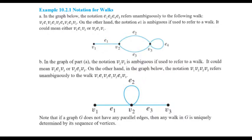On the other hand, the notation E₁ alone is ambiguous, because we don't know if it represents the walk V₁, E₁, V₂ or the walk V₂, E₁, V₁. It shows a walk but does not show the direction — whether it is from left to right or from right to left.